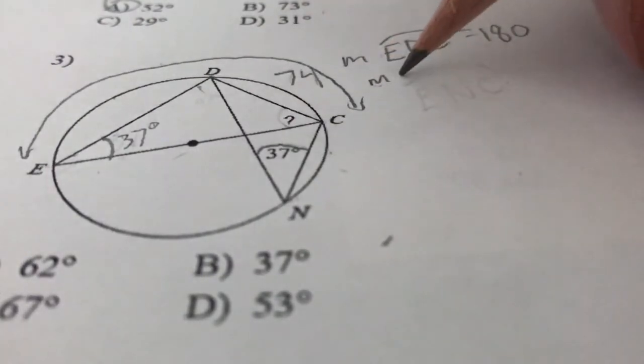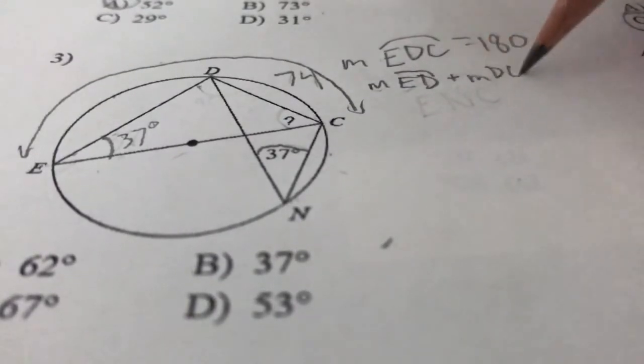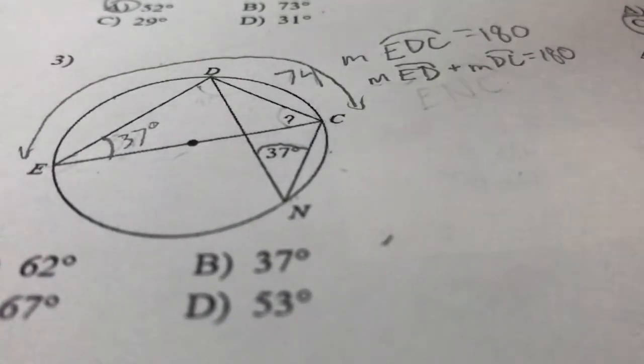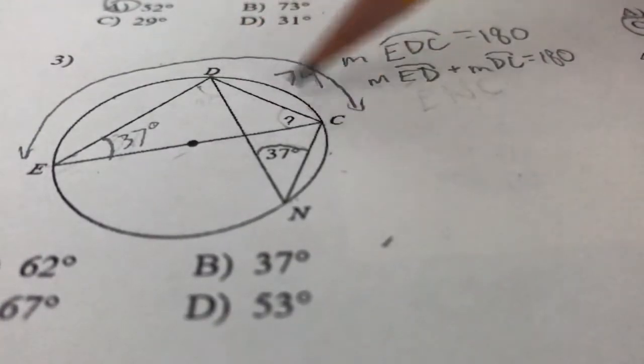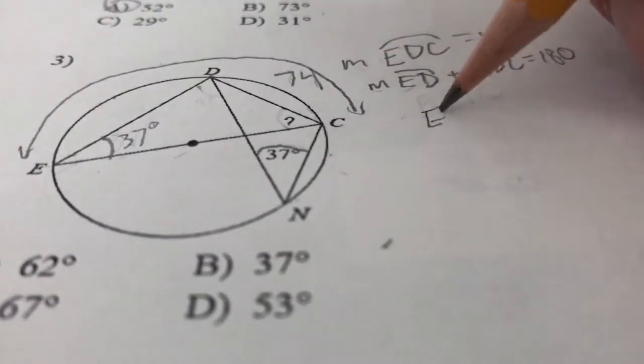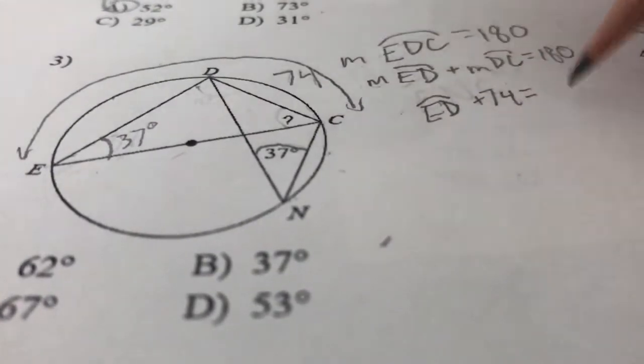So we can say the measure of ED plus measure of DC is equal to 180. We can also say that because we know what DC is, we can put in 74 in here. I'm just going to say ED plus 74 equals 180.